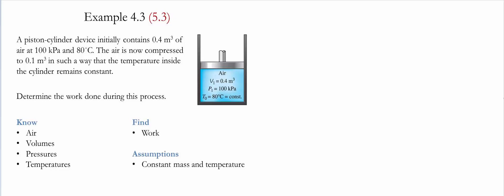Example 4.3 or 5.3 for the given textbooks. In this example, a piston cylinder device initially contains 0.4 meter cubed of air at 100 kilopascals and 80 degrees Celsius.